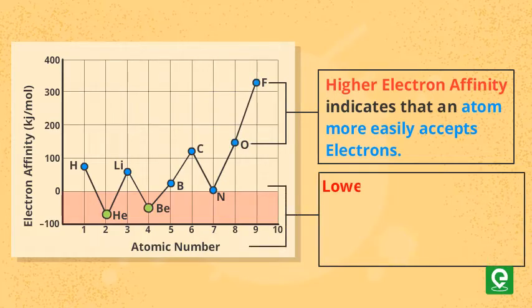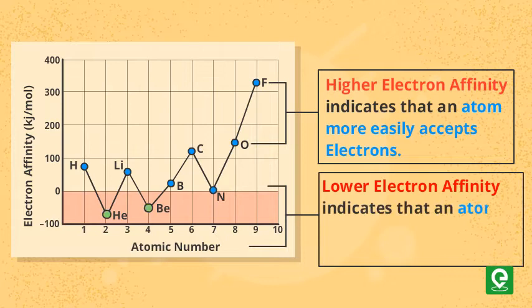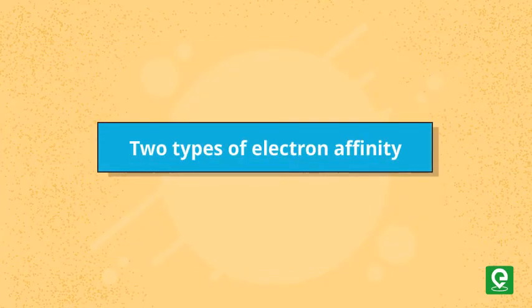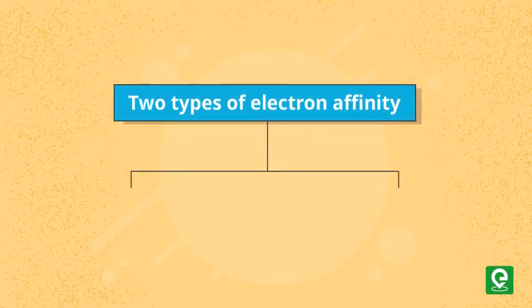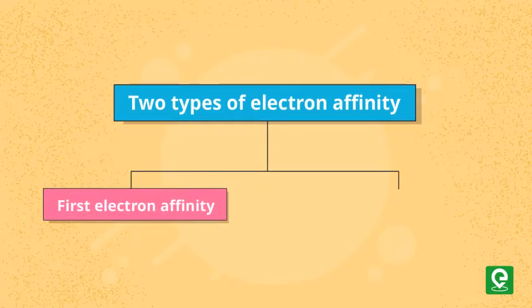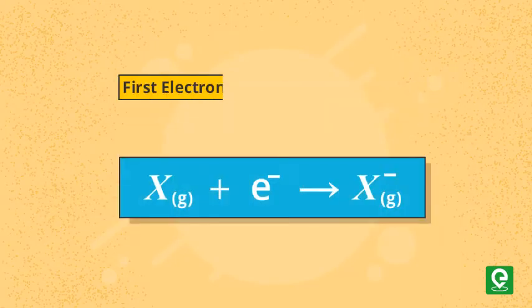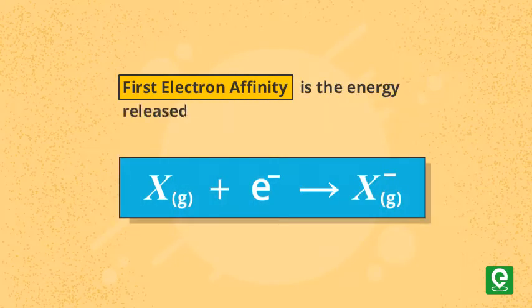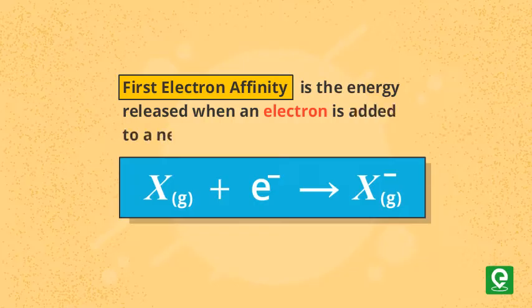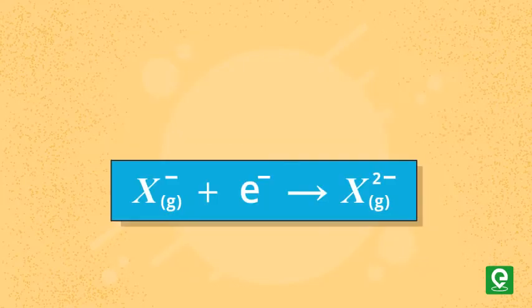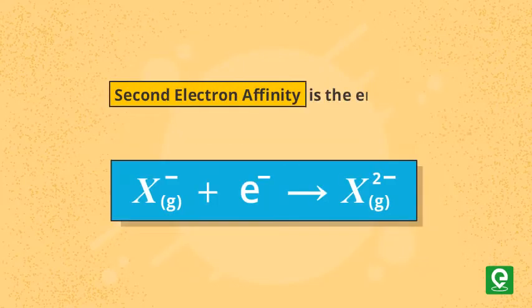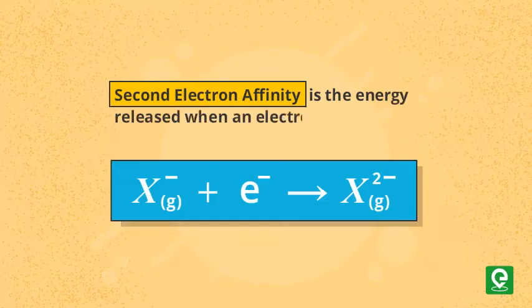An atom with lower electron affinity will not accept electrons as easily. There are two types of electron affinities we must learn about: first electron affinity and second electron affinity. First electron affinity is the energy released when an electron is added to a neutral atom, and second electron affinity is the energy released when an electron is added to a negative ion.